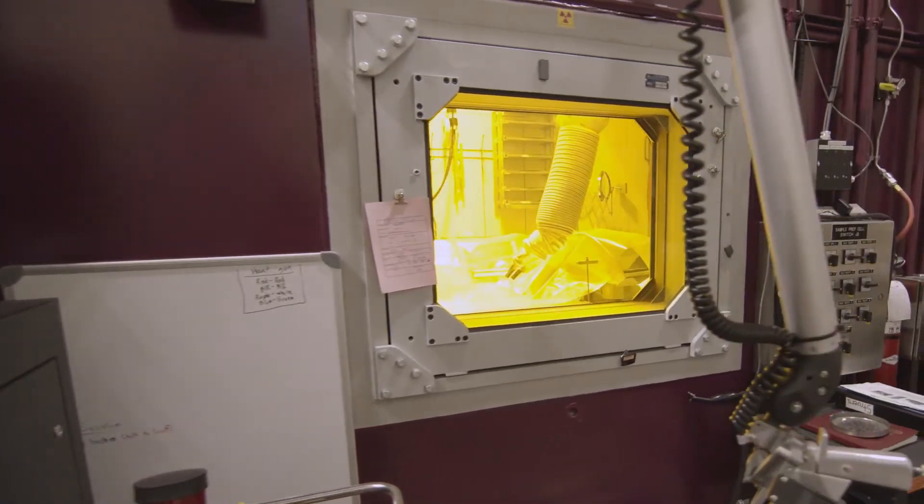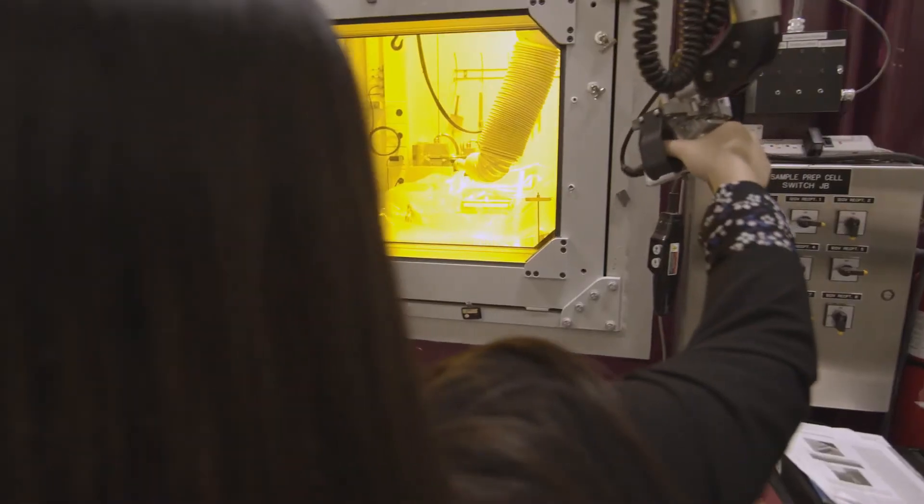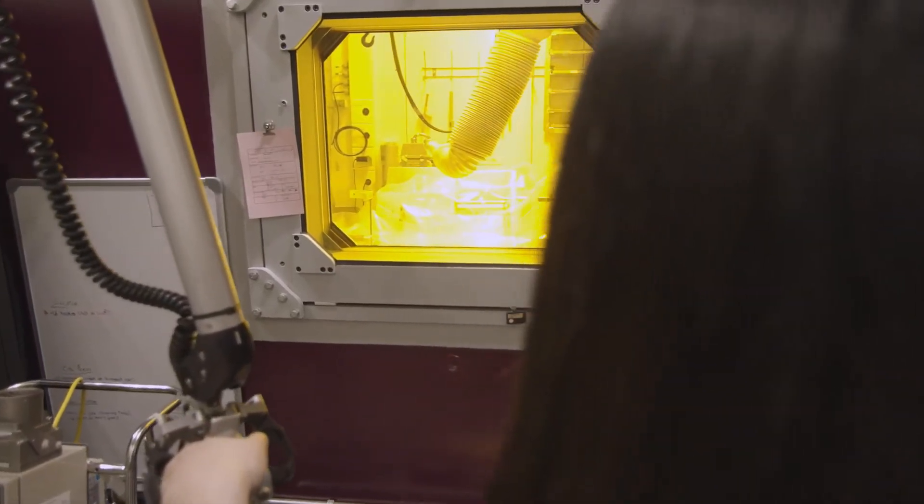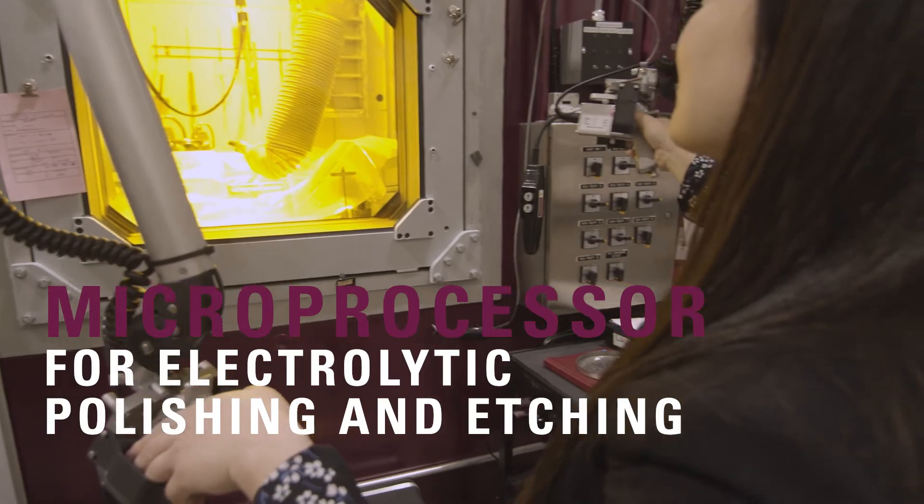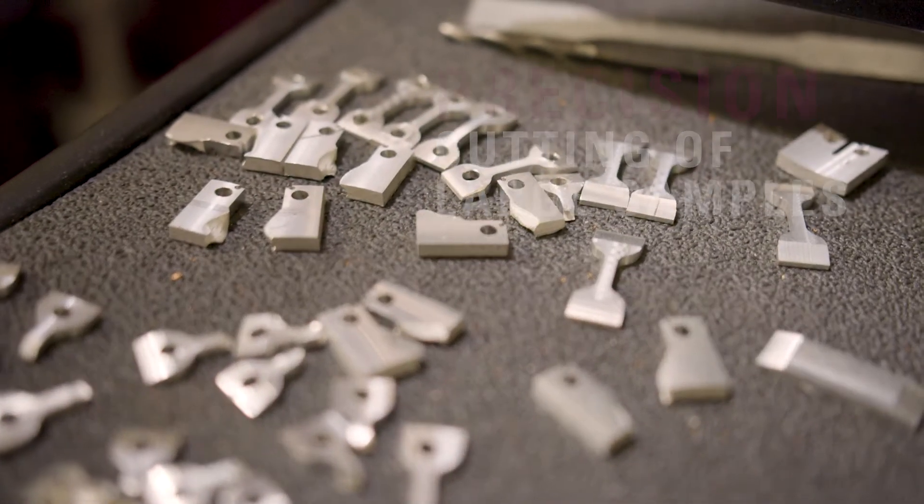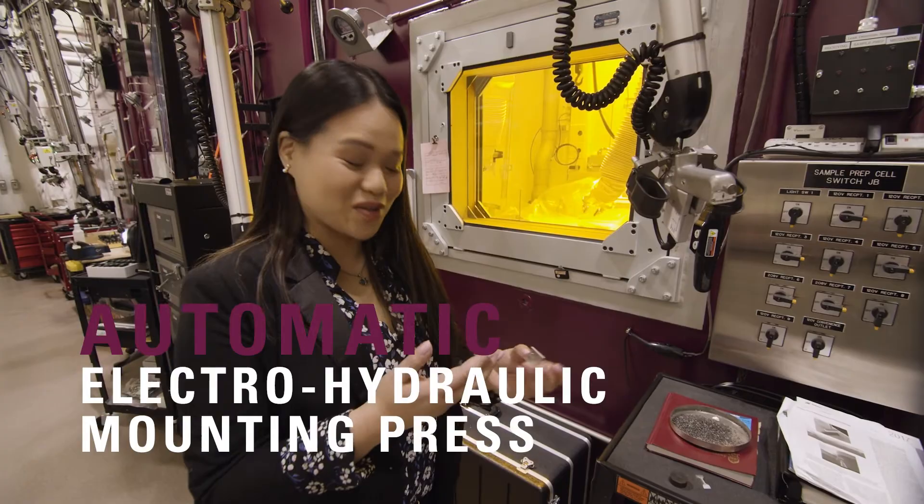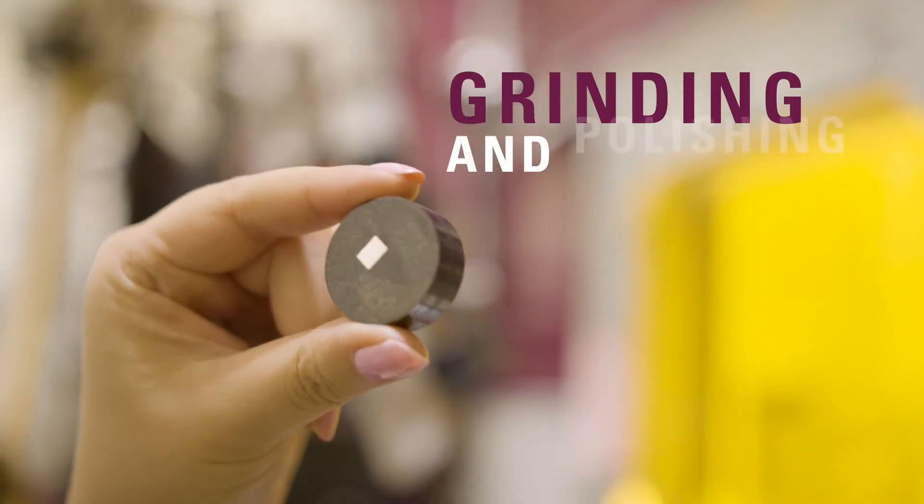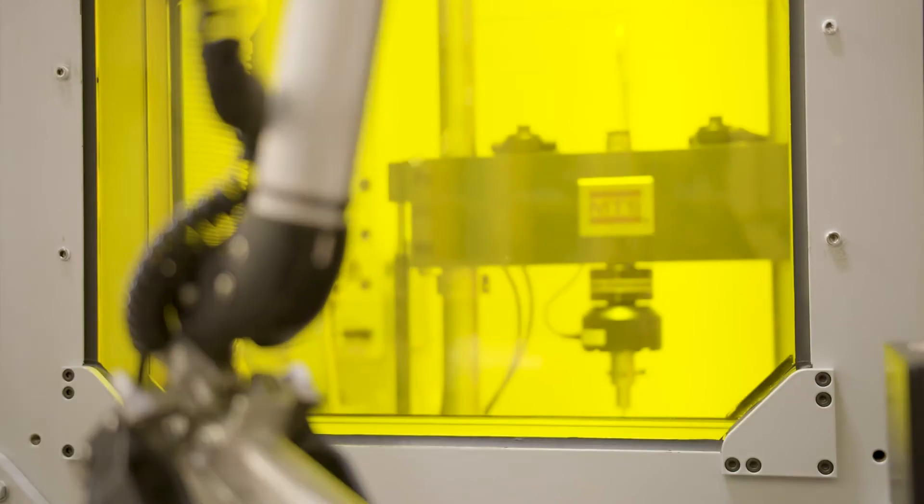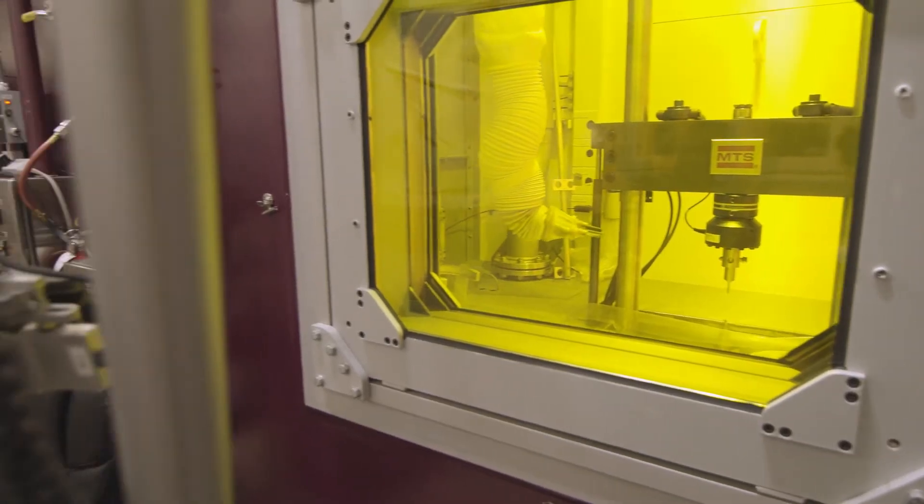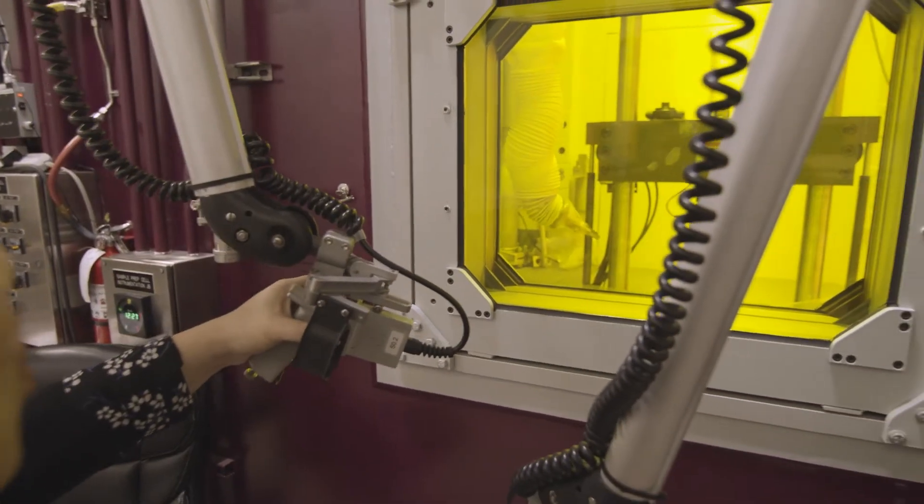The sample preparation cell is equipped with a suite of equipment including a fully automatic microprocessor controlled electrolytic polishing and etching, precision cutting of large samples, an automatic electro-hydraulic mounting press, and a grinding/polishing machine with variable speed. The materials test hot cell is equipped with an MTS Landmark servo-hydraulic test system.